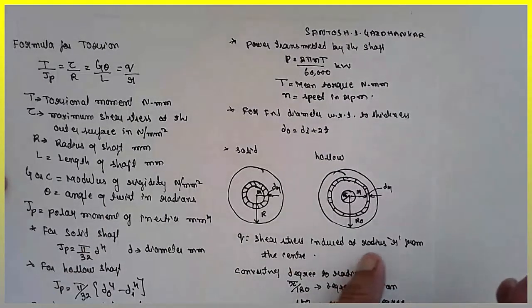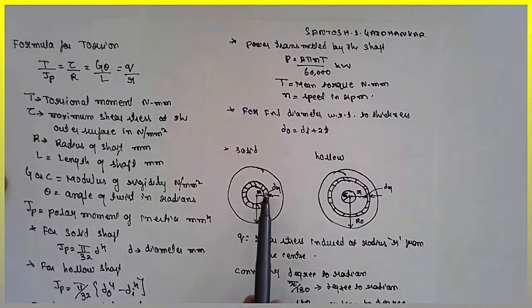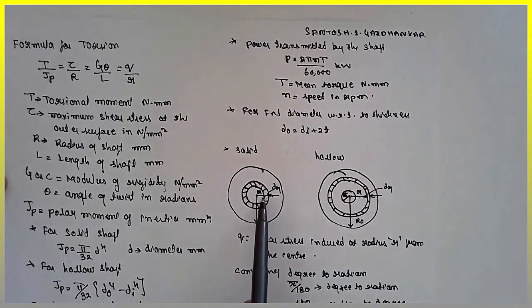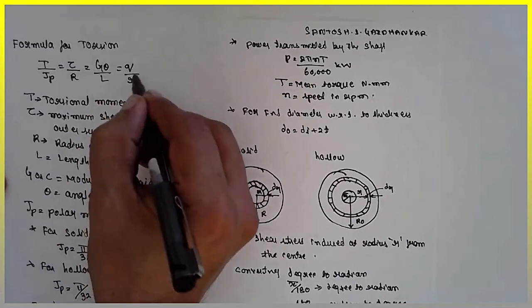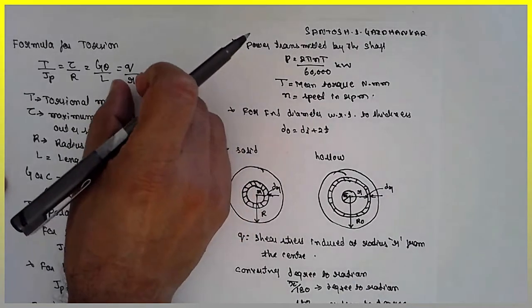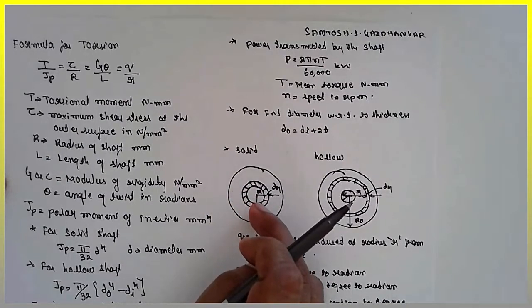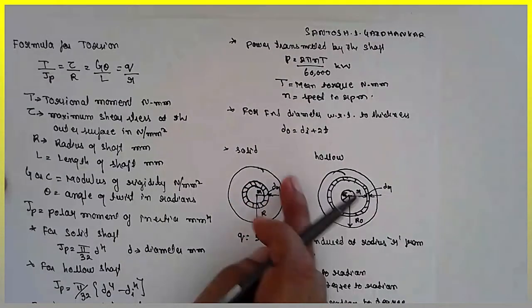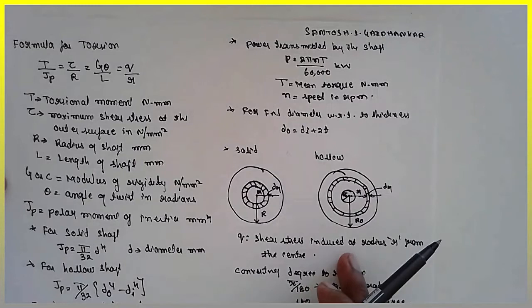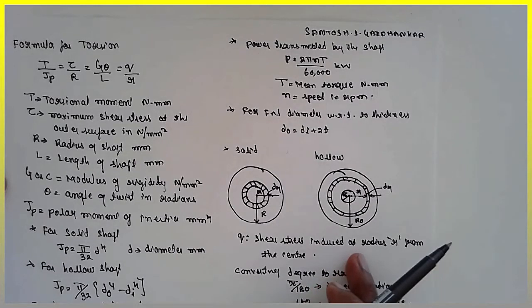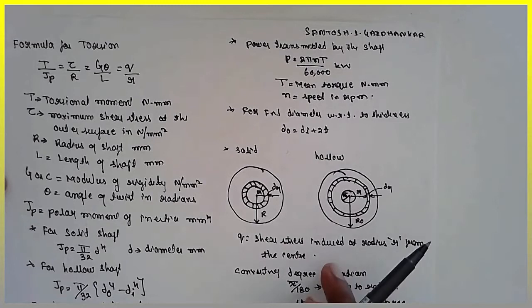Shear stress induced at the radius of r from the center. That means the shear stress over the small elementary part, because we are considering the elementary part in order to integrate the entire thing at radius r from the center.